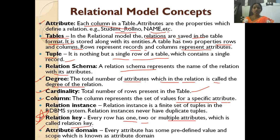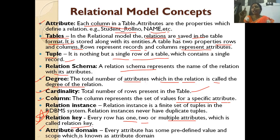Next is attribute domain. Every attribute has some predefined values and scope, which is known as the attribute domain. For example, if a student attempted an exam but wrote nothing, we assign marks as zero. If the student was absent, we write 'absent'. So we give predefined values to the marks column — this is achieved using attribute domain. For a primary key column, the domain could be 'not null', meaning every entry must have a value.